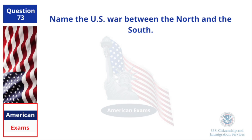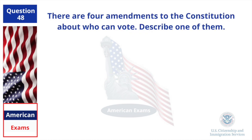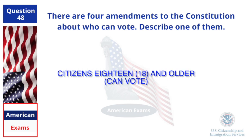Name the U.S. war between the North and the South. The Civil War. There are four amendments to the Constitution about who can vote. Describe one of them. Citizens 18 and older can vote.